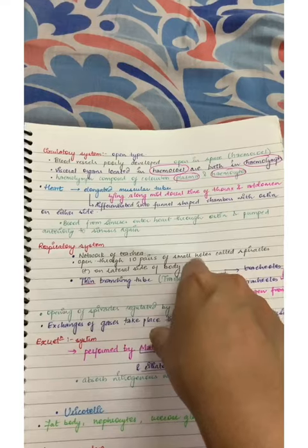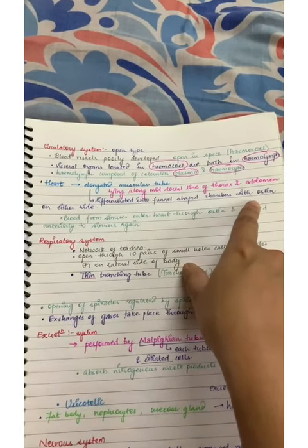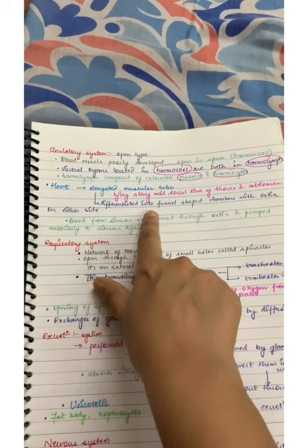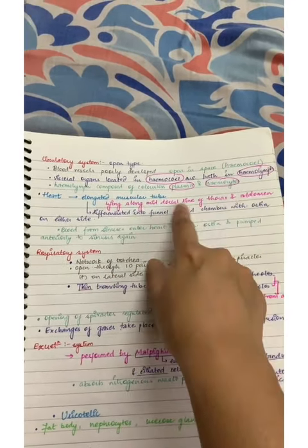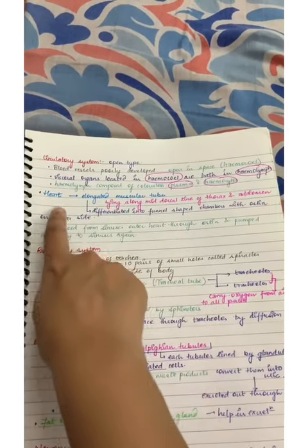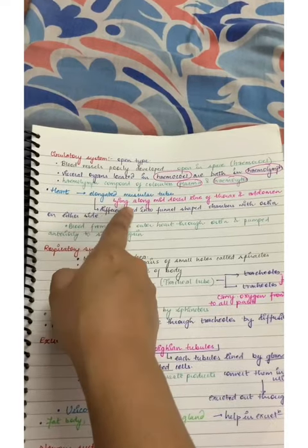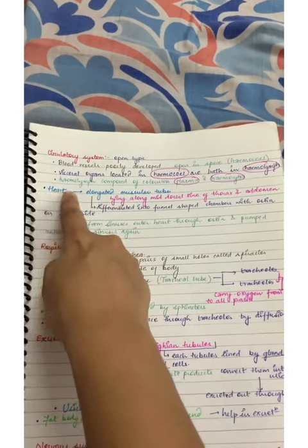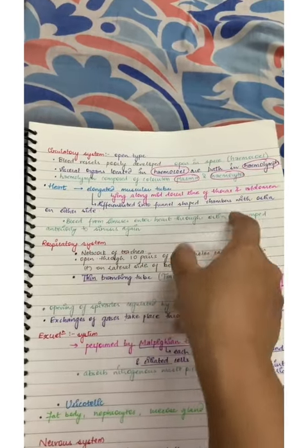Heart which is elongated muscular tube-like, differentiated into funnel-shaped chambers with ostia on either sides, lying along mid-dorsal line of thorax and abdomen. Don't forget, you can see this. If you read it four times then you can remember.